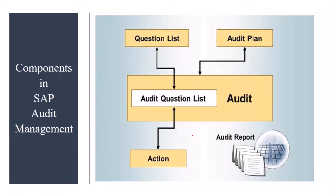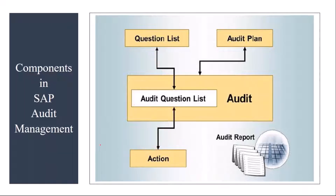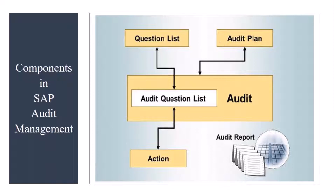The components in SAP audit management are hierarchically structured. First, you have an audit plan. The audit plan contains audits. The audits are assigned with question lists, and from the questions, wherever required, you will have corrective or preventive actions assigned. So the four basic components are: audit plan, audit, question list, and corrective and preventive actions.